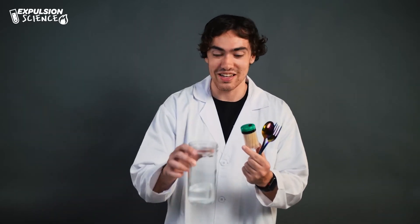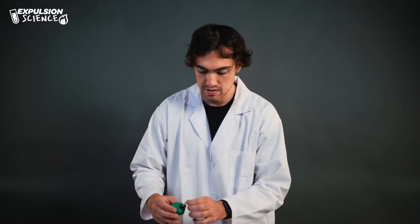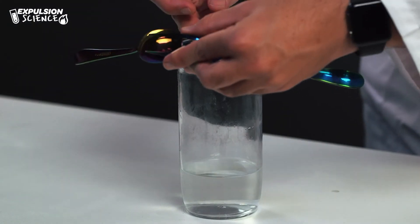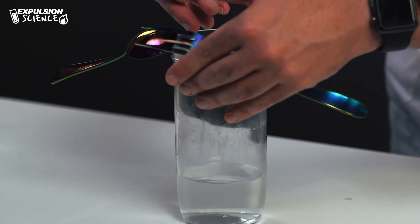Let's get started. So first we're gonna take our fork and our spoon and we're gonna merge them together like so. That's the quickest I have ever done that.